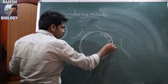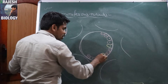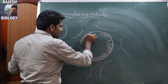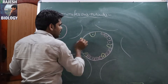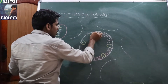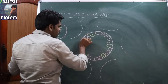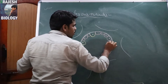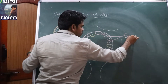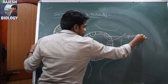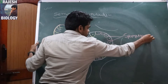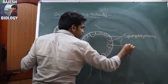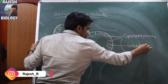Along with the spermatogonial mother cells, there are some specialized nourishing cells present. These nourishing cells are called Sertoli cells. The red color cells are spermatogonial mother cells and the yellow color cells are Sertoli cells.